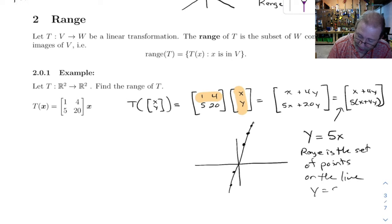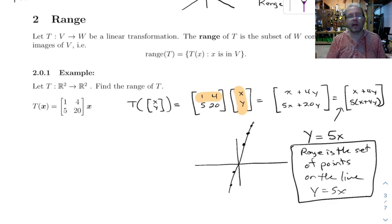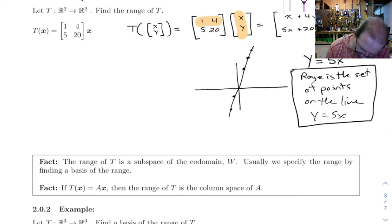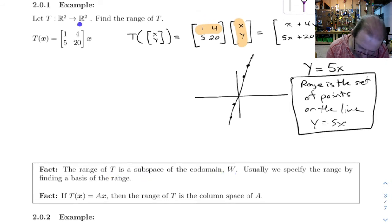And you might think that's a lot of trouble and a pain to write out, and you'd be correct. There's a better way to do this. So let's look at these facts down here. The range of T is a subspace of the codomain W. If you go back up here, the codomain was R2, and the range was this line right here. And sure enough, that line is a subspace of R2, because the subspaces of R2 are lines through the origin.